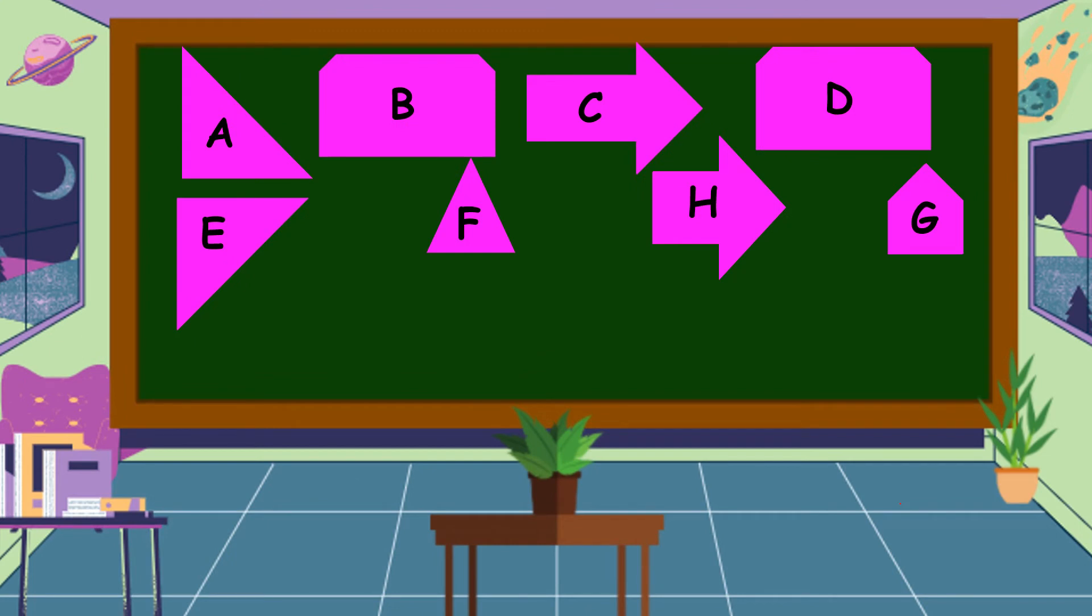Which of these polygons are identical in shape and size? Okay, polygons A and E are identical in shape and size as well as polygons B and D. Polygons C and H have the same shape but not of the same size. Polygons F and G have different shape and size.